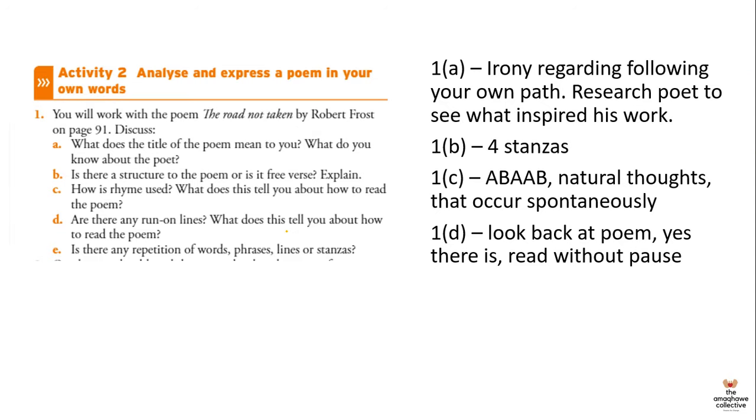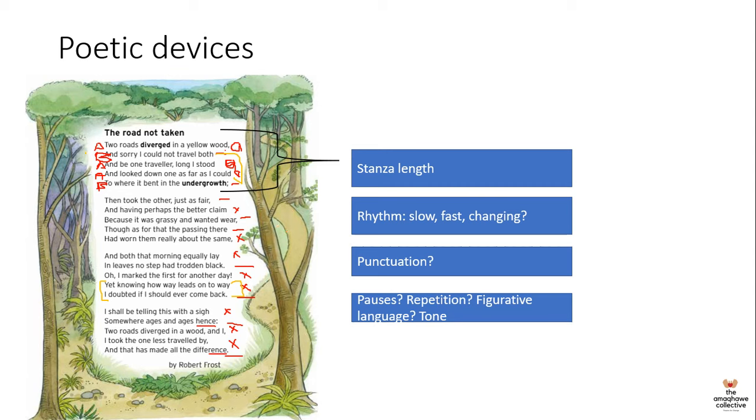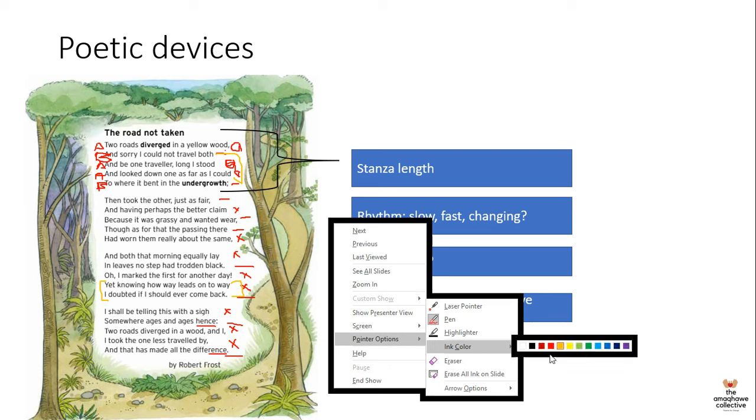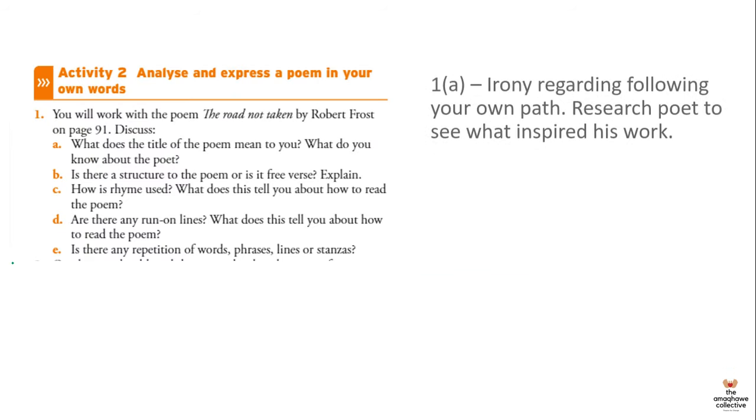And then the last question is, is there any repetition of words or phrases on lines, stanzas? Yes, we've already determined that there is in the, I need to choose a different color now. And I'm going to choose a nice green. Yes, there is. The first line of the poem says two lines diverge in the yellow wood. And then I think it's line 16, 17, 18, 19, 20. In 18, it says the same thing. Two roads diverge in a wood. So there is a repetition there as well.